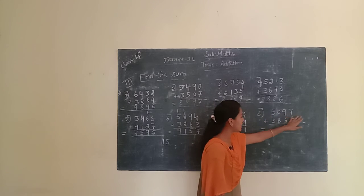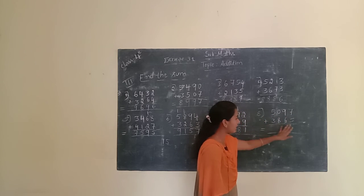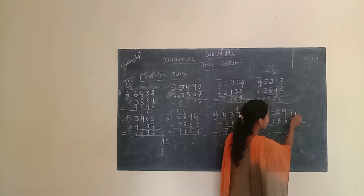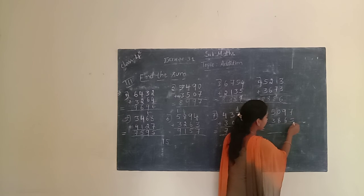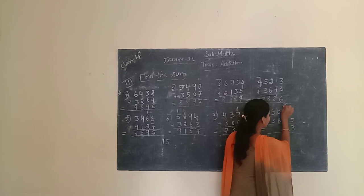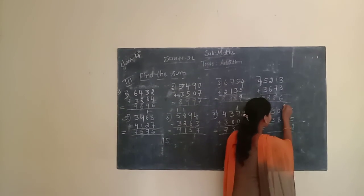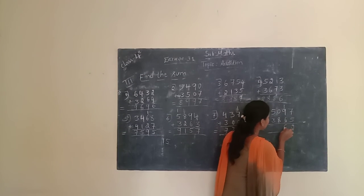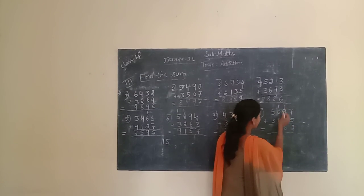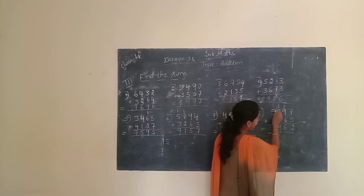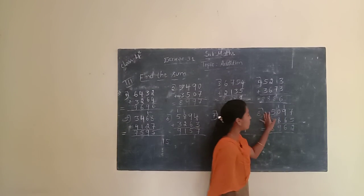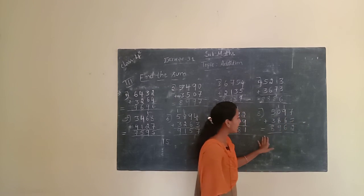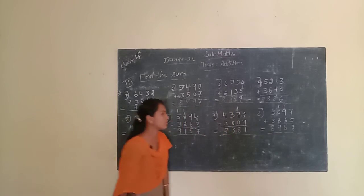Give one more example. The given number is 5,097 plus 3,865. We have to find out the sum. First, we have to start at the unit place. Unit place is 7 and 5. 7 plus 5 is 13. We have to write 3, carry 1. Then 9 plus 1 is 10, and 10 plus 6 is 16. We write 6, carry 1. Then 8 plus 1 is 9. We have to write 9. Next, 5 plus 3 is 8. We have to write 8. So 5,097 plus 3,865 equals 8,962.